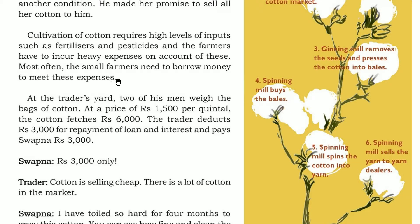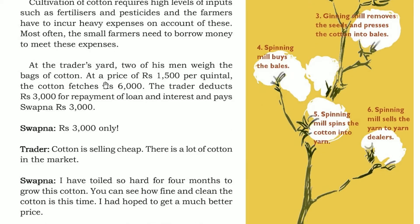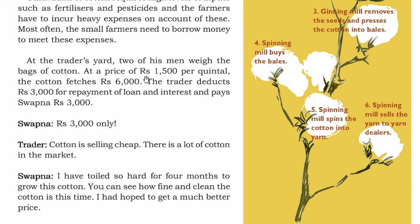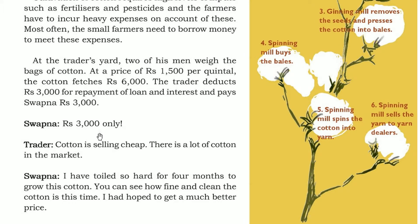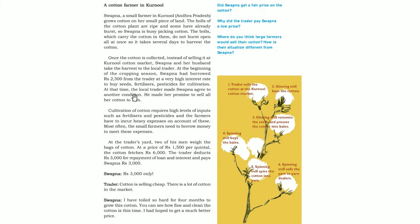That is why they borrow money from local traders, like Swapna has done. At the trader's yard, two men are weighing the cotton. The price the local trader offered was 1500 rupees per quintal, fetching 6000 rupees. The trader deducts 3000 for the repayment of loan and interest, so Swapna gets only 3000 rupees. Swapna asked why only 3000, and the trader replied that cotton is selling cheap because there is a lot of cotton in the market.